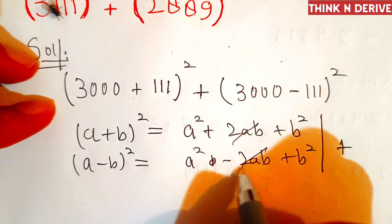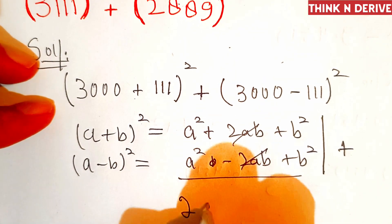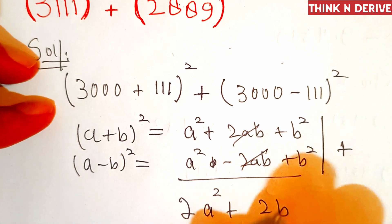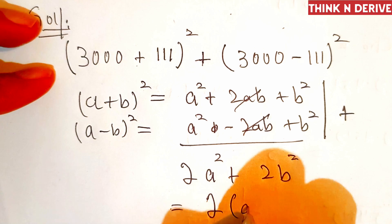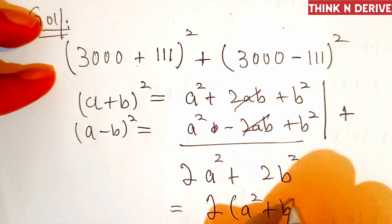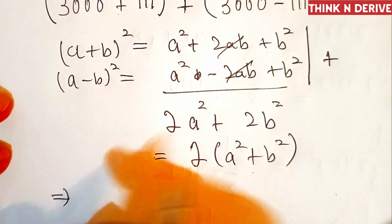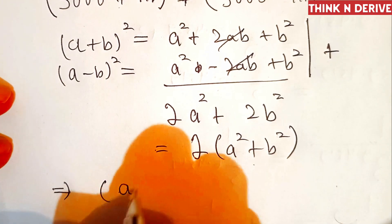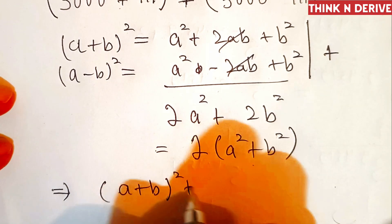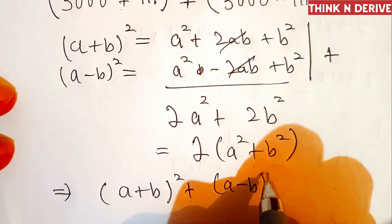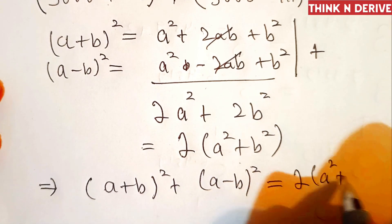The 2ab terms cancel out, so we get 2a² + 2b², which means (a + b)² + (a - b)² is equal to 2(a² + b²).